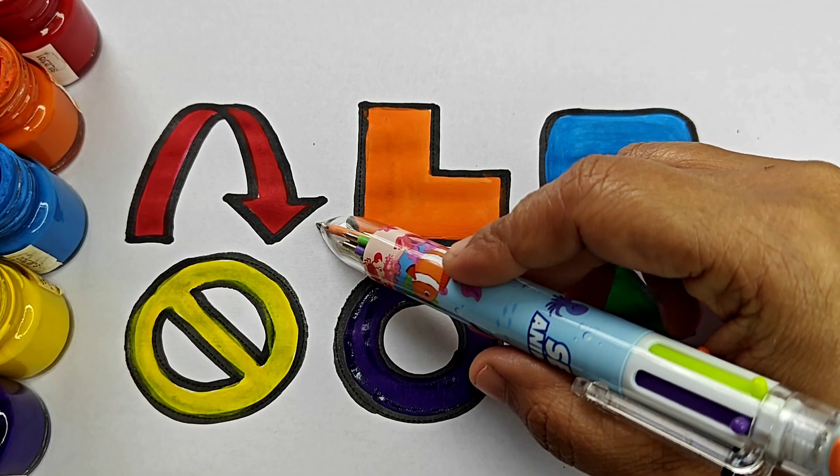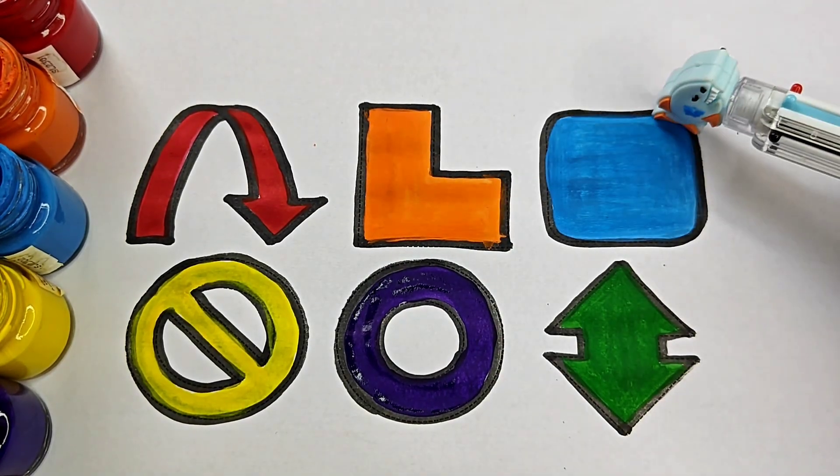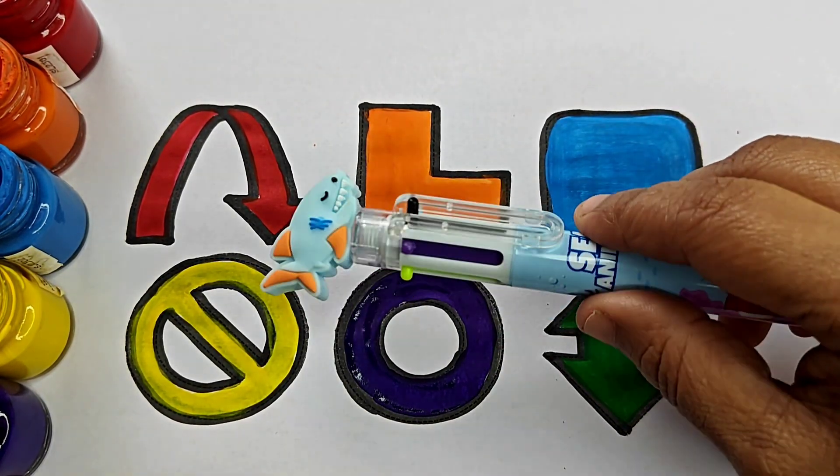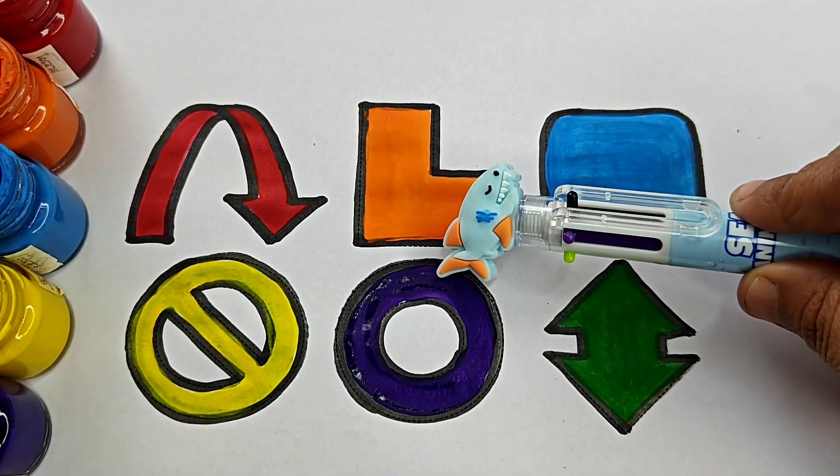This is curve down arrow. This is L shape. Rounded square. This one is not allowed symbol. Hollow circle.